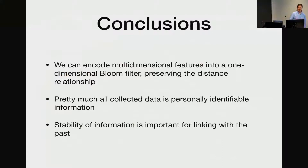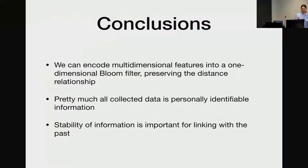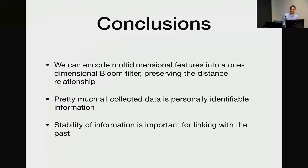Conclusions: we can actually encode multidimensional features into a one-dimensional bloom filter while preserving the distance relationship. And this does not only work for two-dimensional inputs — it can be n-dimensional, using locality-sensitive hashing functions. Why is that important? Pretty much all the data that companies collect is somewhat personally identifiable. The features usually used for linkage — like address and phone numbers — are not very stable. Other things, like your behavior, the way you walk or talk, how you look — are way more stable. I think this technique could enable linkage on more interesting, stable personal features.